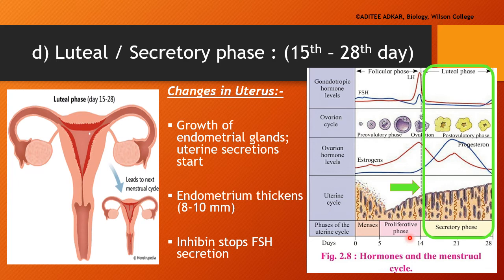In the graphical representation, the luteal or secretory phase from day 15 to day 28 shows an increase in thickness of the uterine endometrium, a rise in progesterone levels as progesterone is being secreted by the corpus luteum, formation of the corpus luteum in the ovaries, and a reduction in FSH levels.